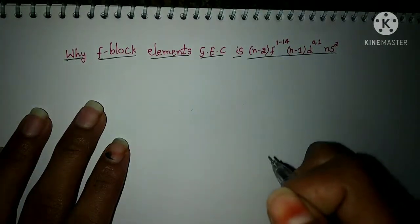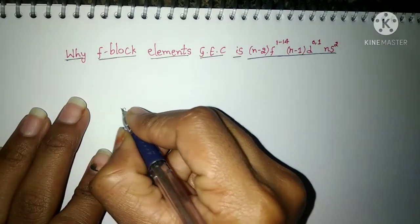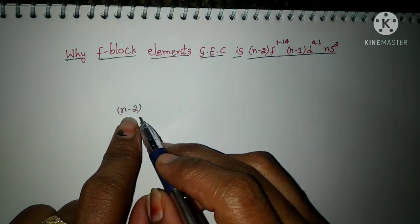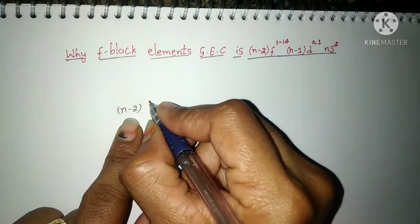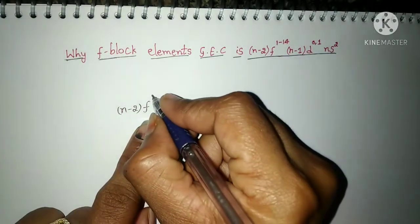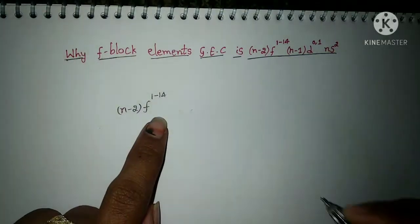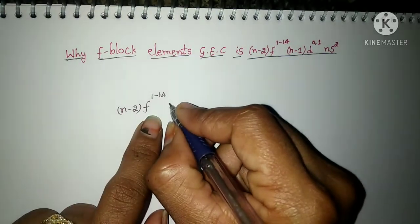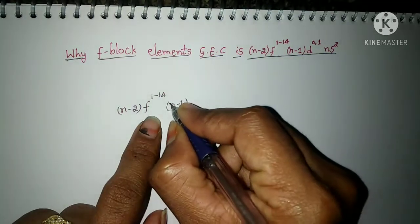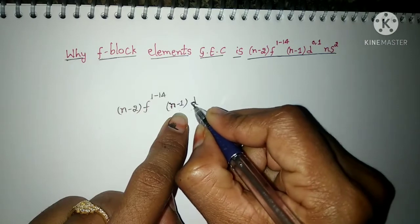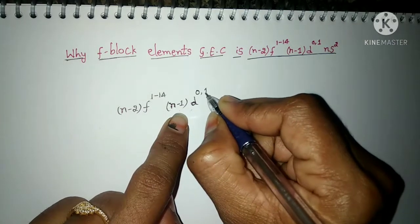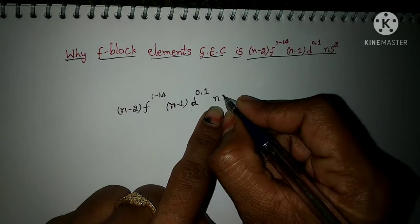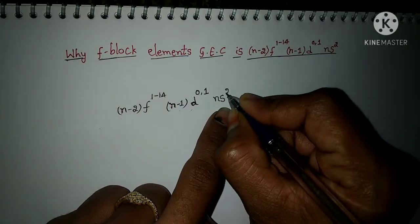All the elements in their anti-penultimate shell — represented as n minus 2 — in the f orbital, how many electrons may be present? It may be from 1 to 14. In the penultimate shell, n minus 1, in the d orbital the number of electrons are either 0 or 1. Similarly, in the valence shell, n is the representation, and in the s orbital two electrons are present.